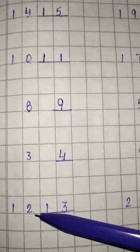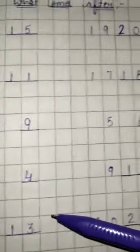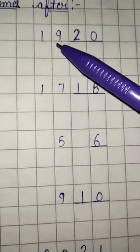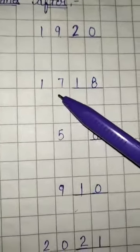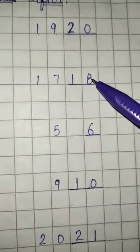Next is 12. And what will come here? 13. Next is 19. And 20. Next is 17. And what will come here? 18.